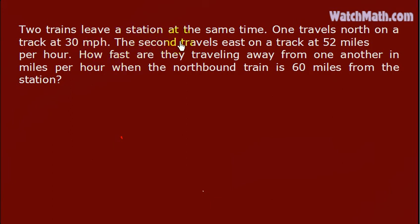Two trains leave a station at the same time. One travels north on a track at 30 miles per hour.